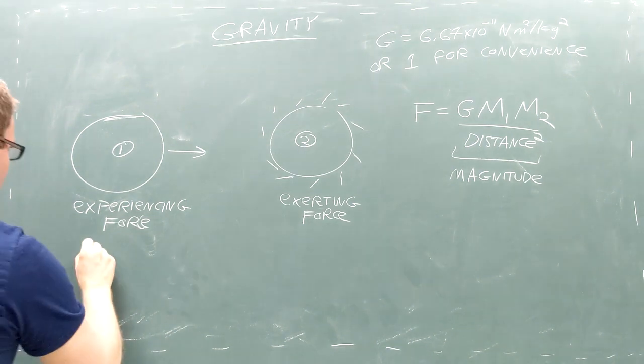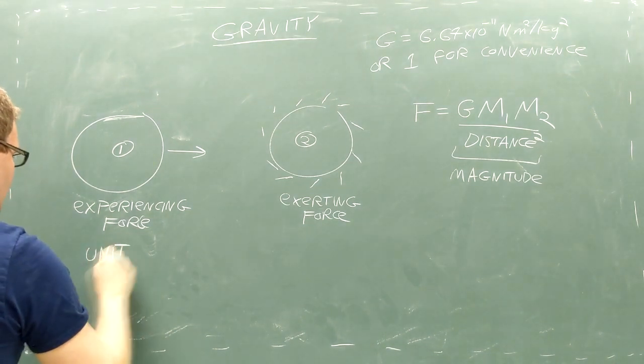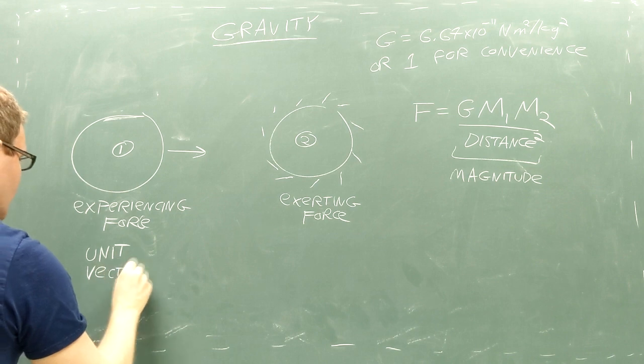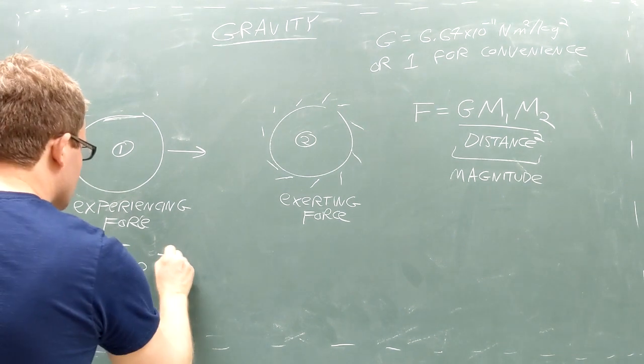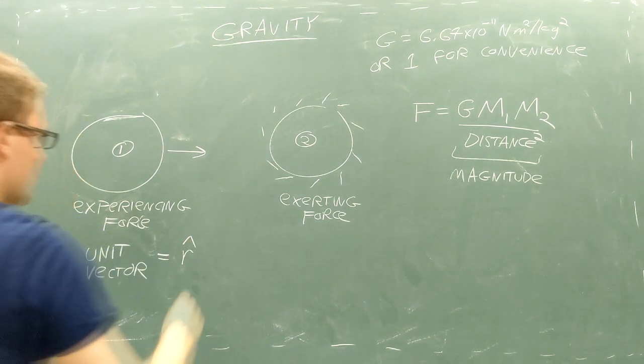The next piece we need is a direction to turn this force into a vector. We can get the direction of the force of gravity using something called a unit vector. Your textbook might write a unit vector as a variable with a hat over it.